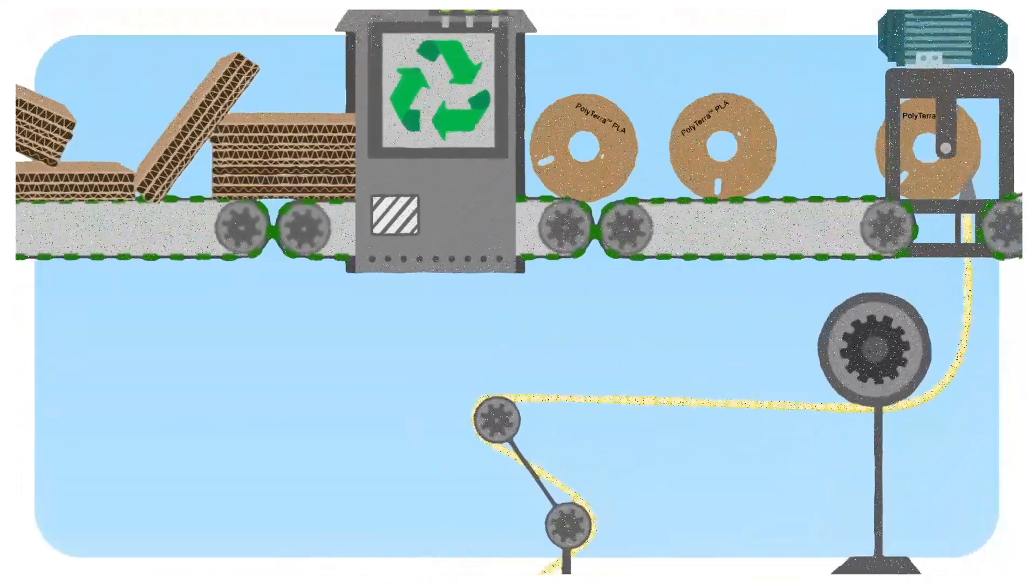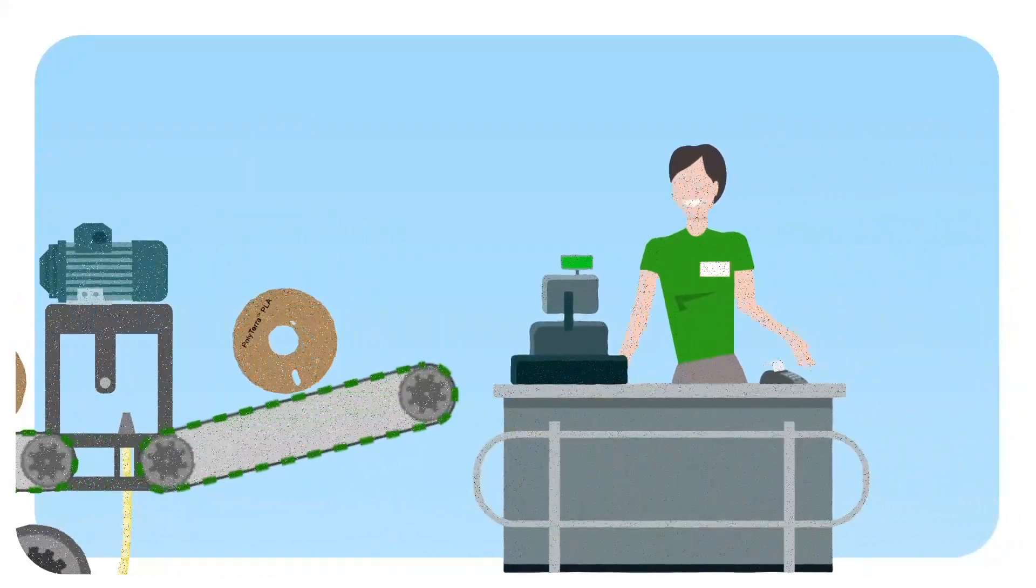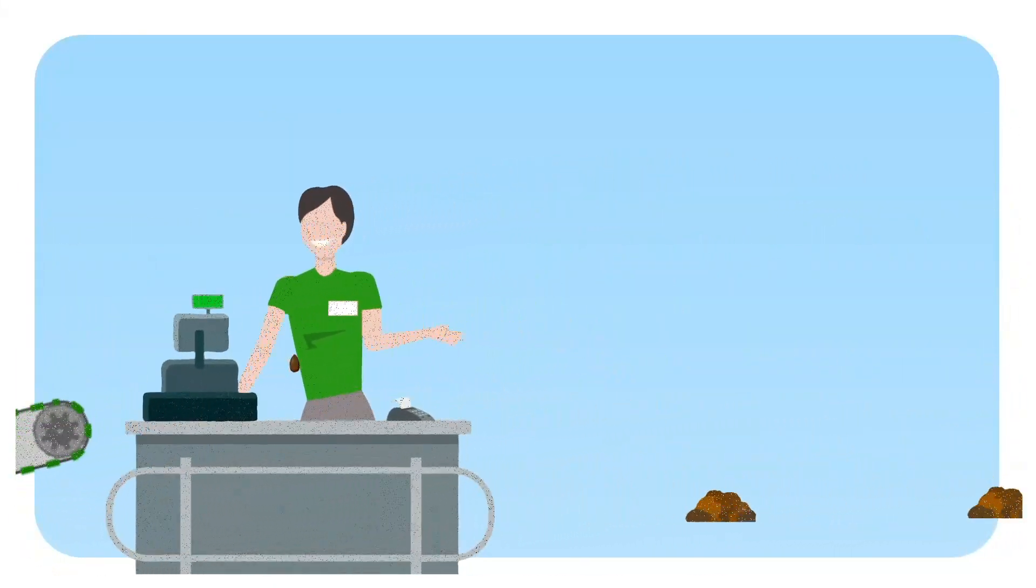The filament is wound onto a recycled cardboard spool, and when the spool is sold, Polymaker will plant a tree local to the point of purchase.